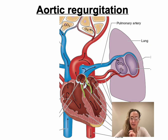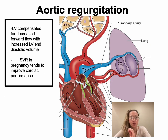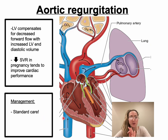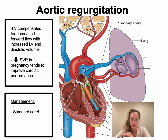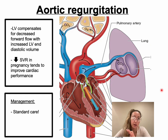Last but not least, aortic regurgitation. The left ventricle compensates for decreased forward flow with increased left ventricular end-diastolic volume. The decrease in systemic vascular resistance in pregnancy actually tends to improve cardiac performance with aortic valve regurgitation. You should be able to provide standard OB care to these patients, but be on alert if any changes occur with vitals or symptoms in anyone who has valvular disease or any cardiac problem in pregnancy.